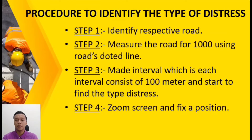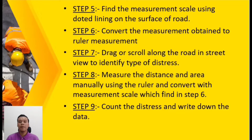Procedure to identify the type of distress: Step 1 — identify the respective road. Step 2 — measure the road for 1000 meters using the road's dotted line. Step 3 — make intervals of 100 meters each and start finding the type of distress. Step 4 — zoom the screen and fix a position. Step 5 — find the measurement scale using the dotted line on the road surface. Step 6 — convert the measurement to the rule of measurement. Step 7 — drag or roll along the road in street view to identify distress. Step 8 — measure the distance and area manually using a ruler and convert with the measurement scale. The final step is to count the distress and write down the data.